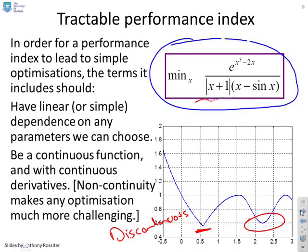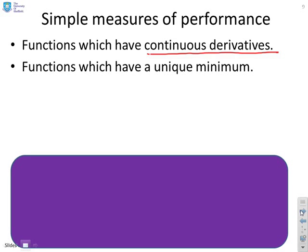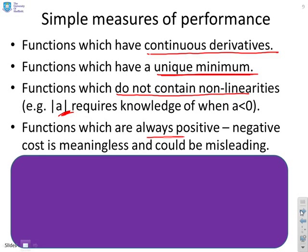Simple measures of performance. We want things which have continuous derivatives, because they allow us to have robust and simple optimisers which converge in a good time period. We want functions which have a unique minimum, because if there are lots and lots of different minima, how are you going to find the global minima? Well, it's not straightforward to guarantee unless you have some sort of bounding box. We want functions which do not contain nonlinearities, because again, nonlinearities are hard to deal with. If I have something like modulus of a, then in order to do the optimisation, I need to know, is a positive or is a negative, and that is difficult to handle. I want functions which are always positive, because a negative cost is meaningless and could be misleading.